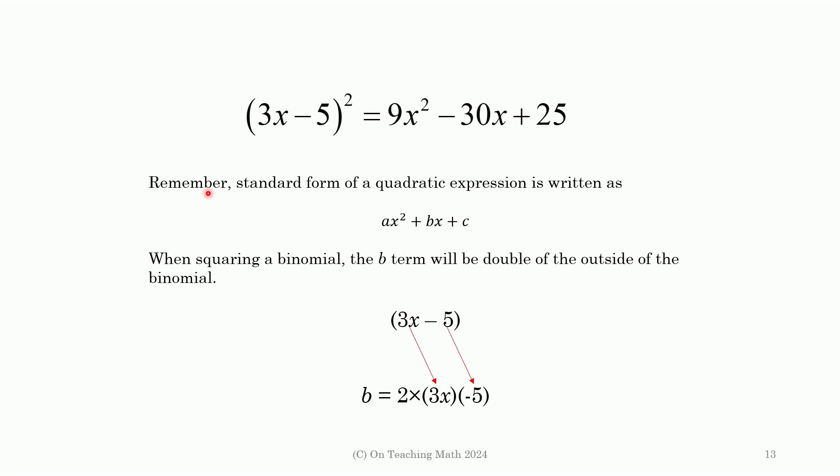When you have a quadratic, the standard form is ax squared plus bx plus c. So a, b, and c are the coefficients, right? So here a is 9, b is negative 30, and c is 25. The thing that's kind of cool is that if you square a binomial, the b term is going to be double of the product of these two things right here.